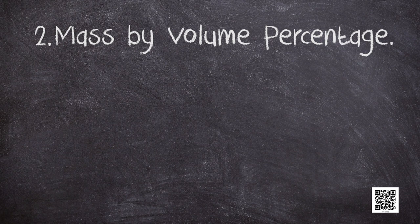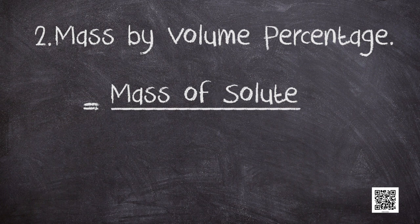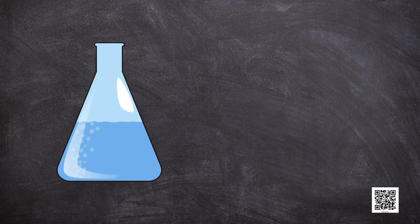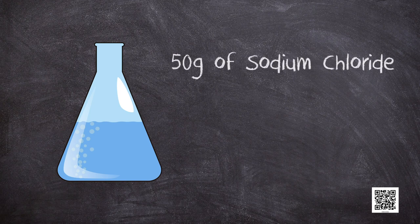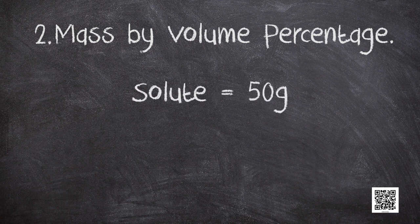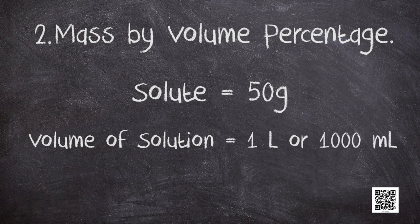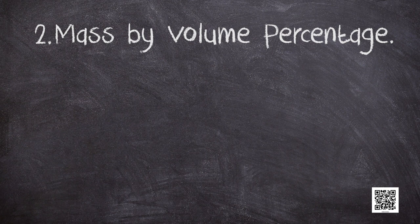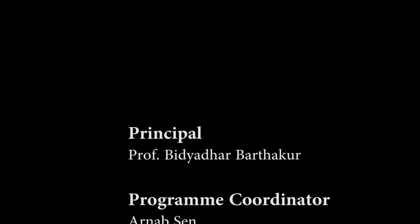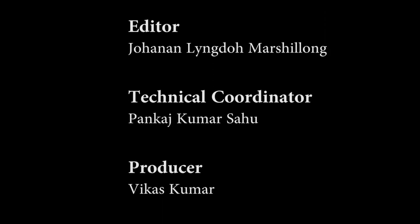The concentration of a solution in terms of mass by volume percentage is calculated as the mass of the solute divided by the volume of the solution, multiplied by 100. For example, if a solution contains 50 grams of sodium chloride and 1 liter of water, the mass of the solute is 50 grams and the volume of the solution is 1 liter or 1000 milliliters. Hence, 50 grams divided by 1000 milliliters multiplied by 100 gives 5% concentration.